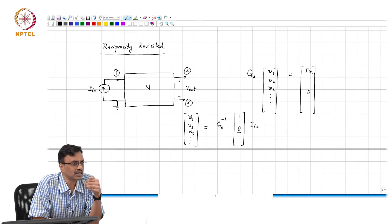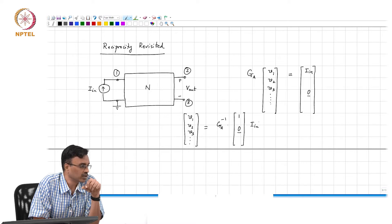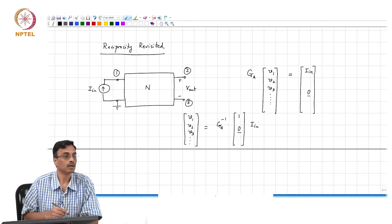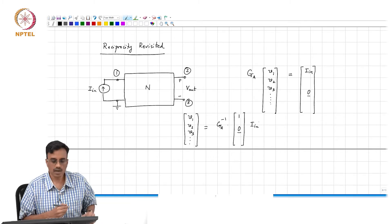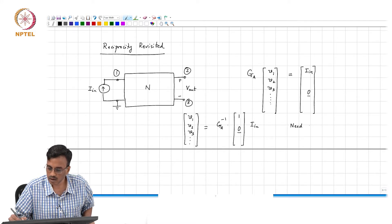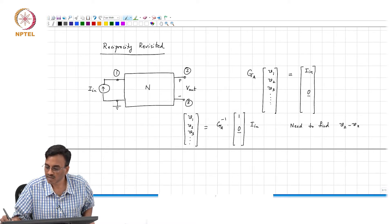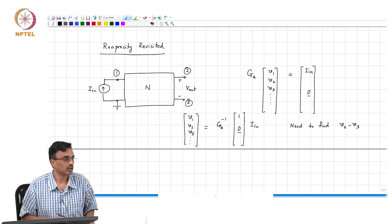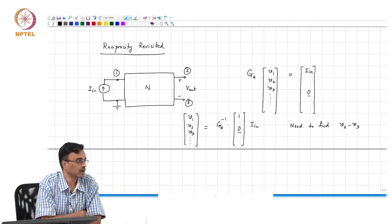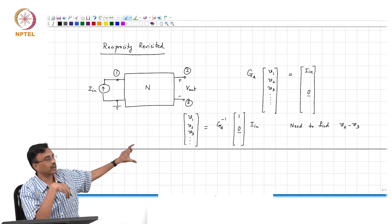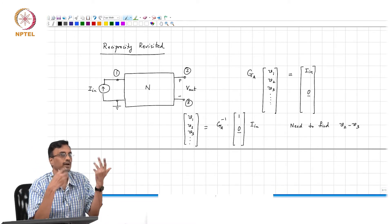And this will give me the output, will give me the node voltages, all the node voltages and all the currents that are flowing through the controlled sources and the zero voltage sources needed in any of the control sources. Does it make sense? But what am I actually interested in? I am actually only interested in finding V2 minus V3.